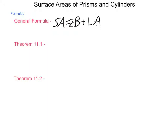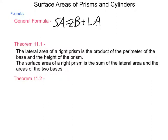Theorem 11.1 helps us work out this for a prism. It states the lateral area of a right prism is the product of the perimeter of the base and the height of the prism, so lateral area equals P times H. The surface area of a right prism is the sum of the lateral area and the areas of the two bases: surface area equals lateral area plus two times B, where capital B means the area of the base.